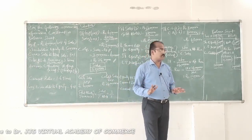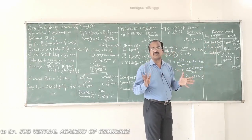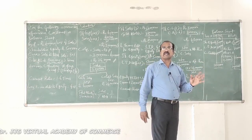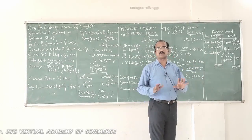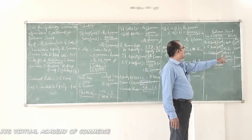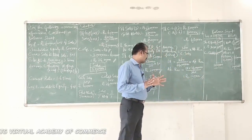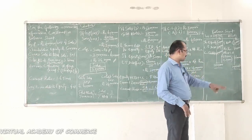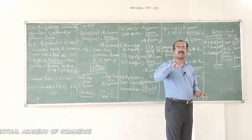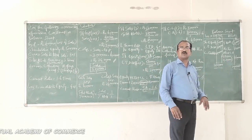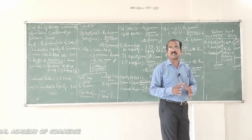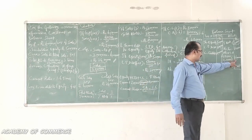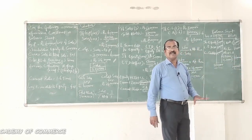Now we are ready to prepare the balance sheet. On the liabilities side: shareholders equity is 5 lakhs, long-term debt is 2 lakhs, current liabilities is 3 lakhs — total 10 lakhs. On the assets side: accounts receivable is 1 lakh 20 thousand. Total current assets are 4 lakh 80 thousand; subtracting accounts receivable of 1 lakh 20 thousand leaves 3 lakh 60 thousand as other current assets.